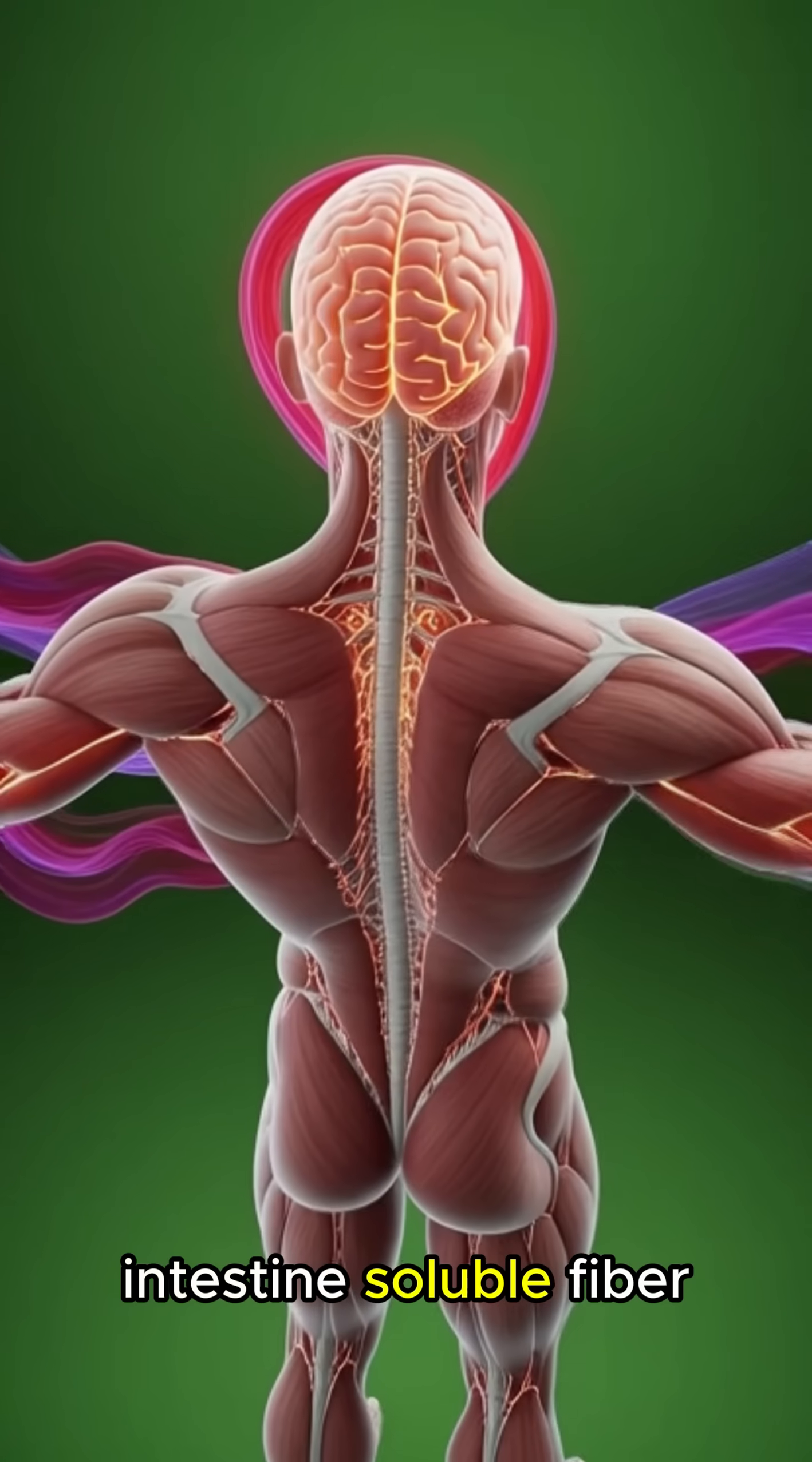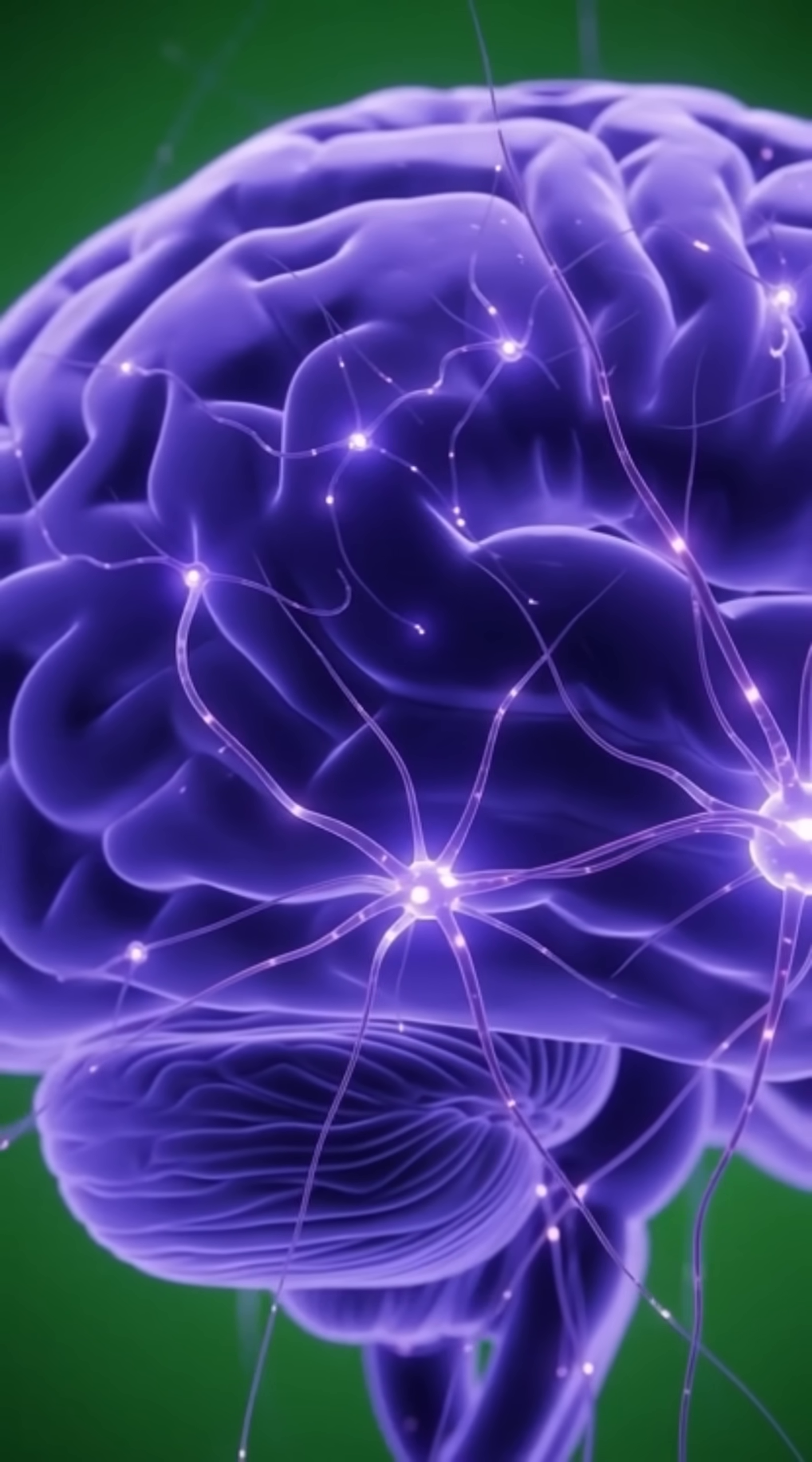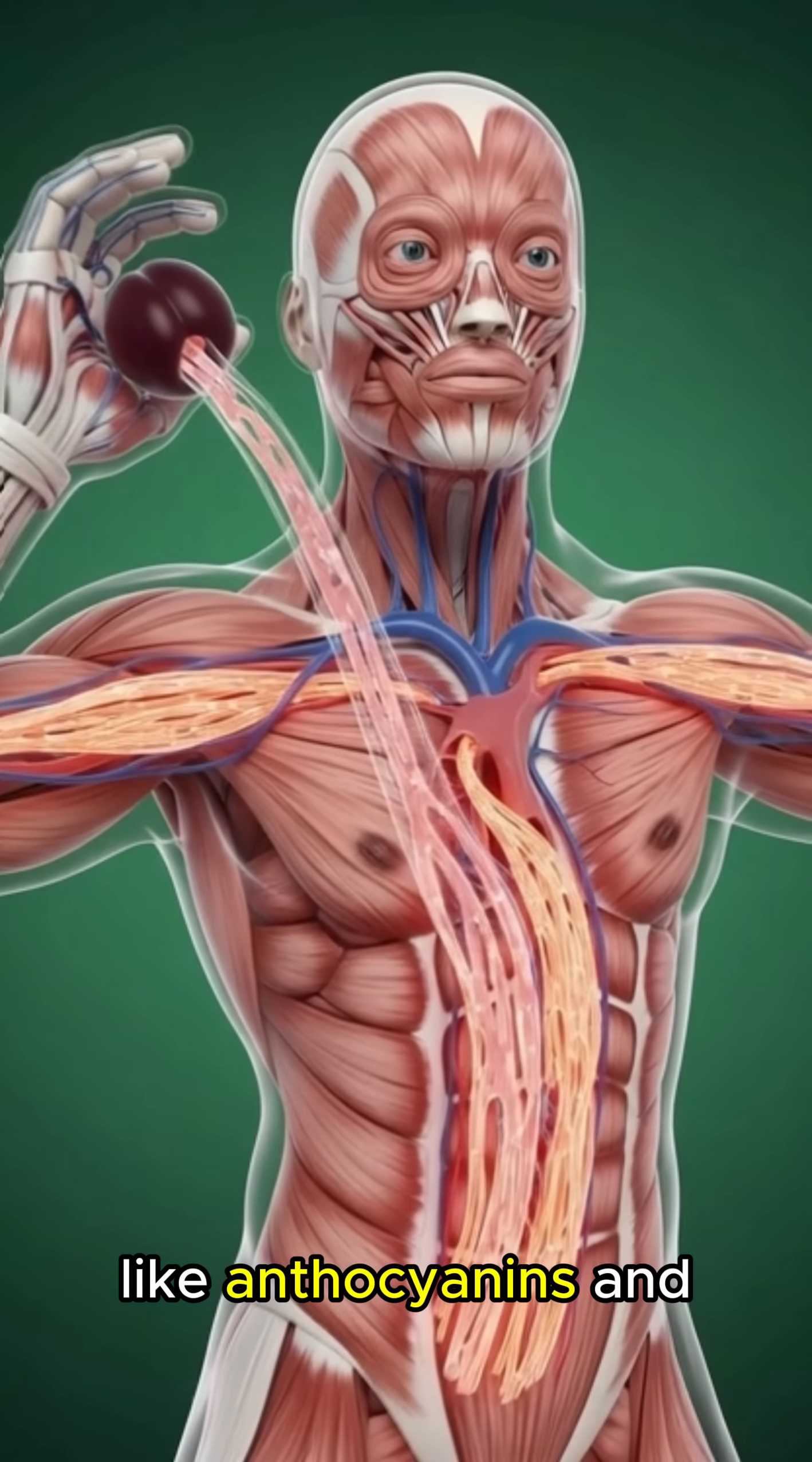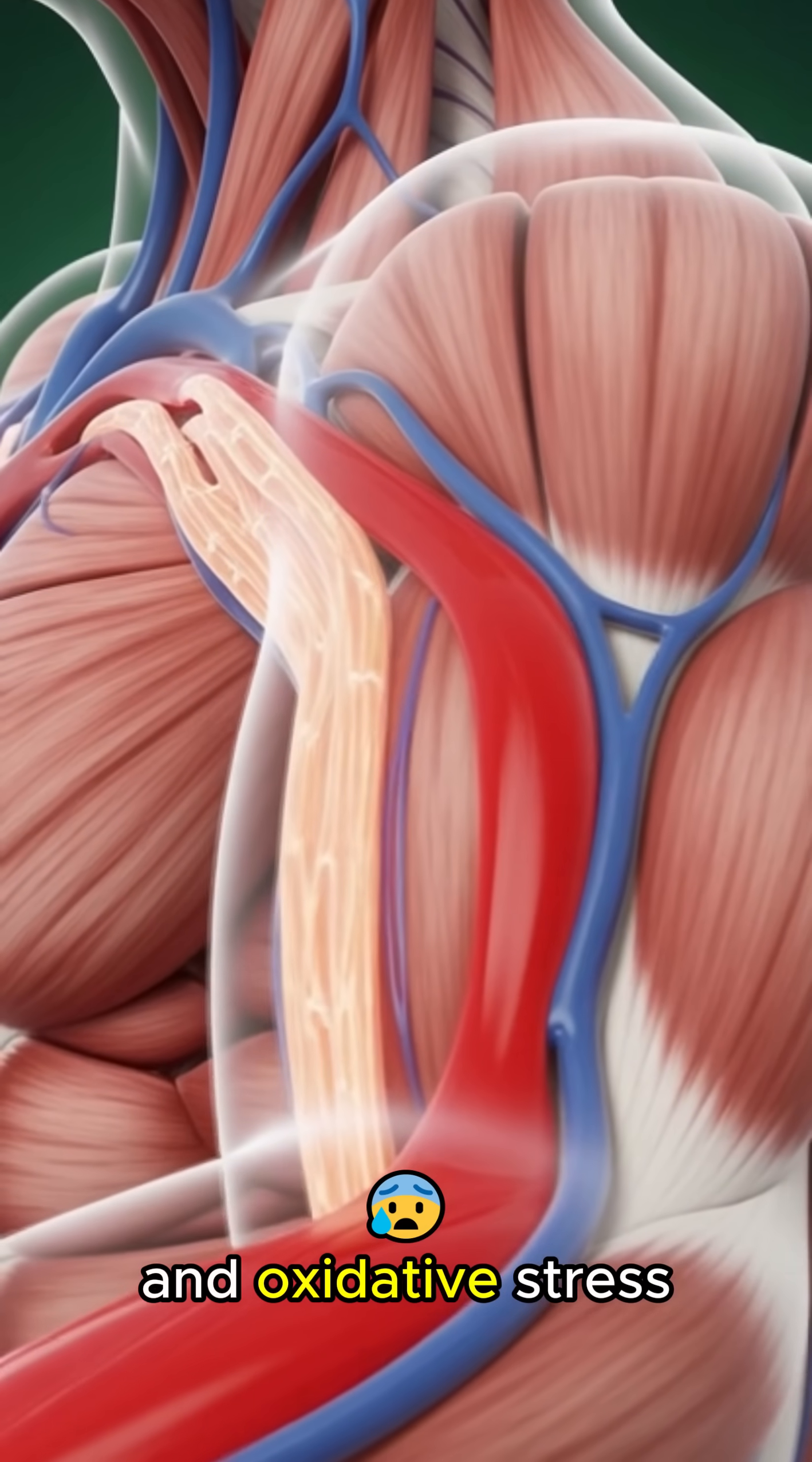In the small intestine, soluble fiber slows sugar absorption, preventing sharp blood sugar spikes. Antioxidants like anthocyanins and phenolic compounds pass into the bloodstream, helping reduce inflammation and oxidative stress.